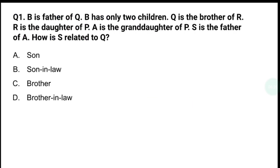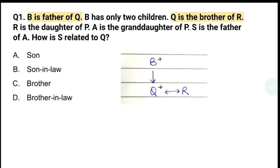So आज जो first question है, इसको देख लेते हैं। यहां पर कुछ relations दिये हैं — B is the father of Q, Q is the brother of R. साथ ही एक condition दे रखी है कि B has only two children। इन सब को use करके family tree कैसे बनेगा। सबसे पहले B is the father of Q बना लिया — father और child का relationship vertical line से। साथ ही Q is the brother of R, तो Q का gender भी पता चल गया — male है, क्यूँकि Q brother है R का।